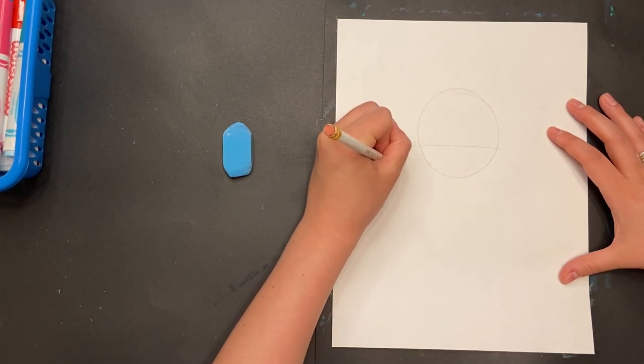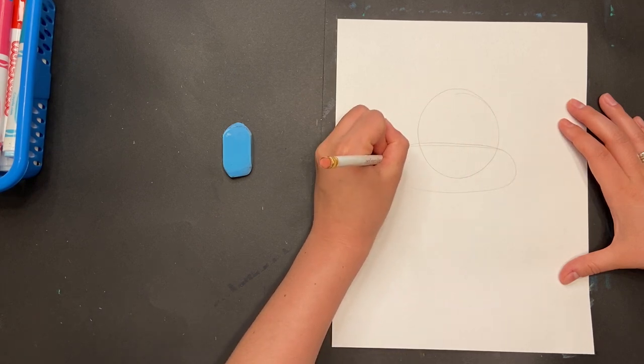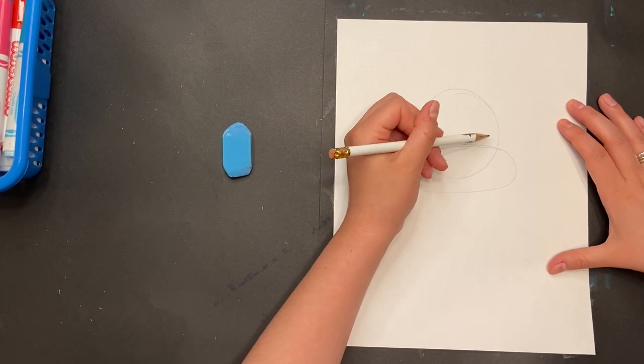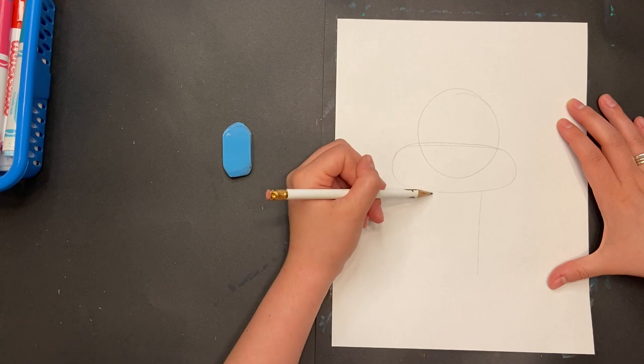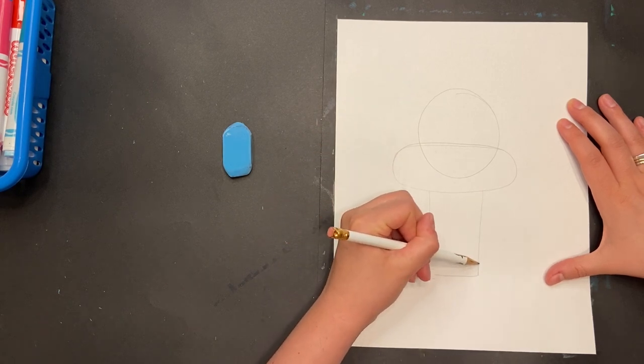Now I'm going to add an oval going across. That's going over the end of my circle. And finally, I'm going to add a rectangle shape down at the bottom that's a little bit in from the sides of my circle.